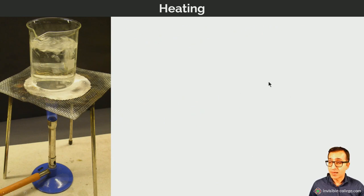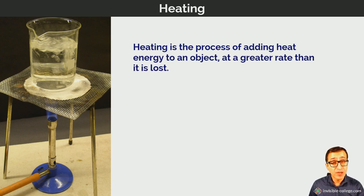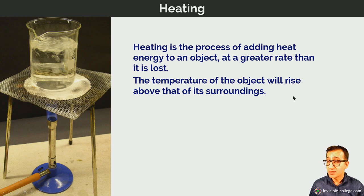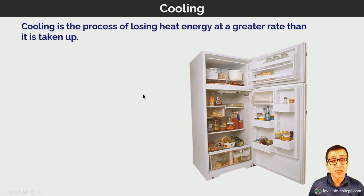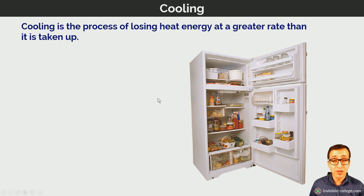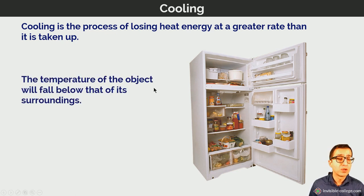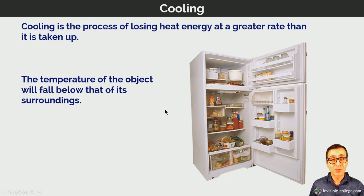When we talk about heating — for example, heating a beaker of water — we are increasing its temperature. It's the process of adding heat energy to an object, increasing its thermal energy by transferring heat into the particles of the object, so the temperature of the object will rise above its surroundings as a result of heating. In contrast, when we talk about cooling, the temperature of the object will be falling because it's the process of losing heat energy — losing thermal energy due to the transfer of heat at a greater rate than it is taken up — and so the temperature of the object will fall relative to its surroundings. Okay everyone, that's going to do it for this lesson. I hope that was useful to you and I will see you in the next one. Take care.